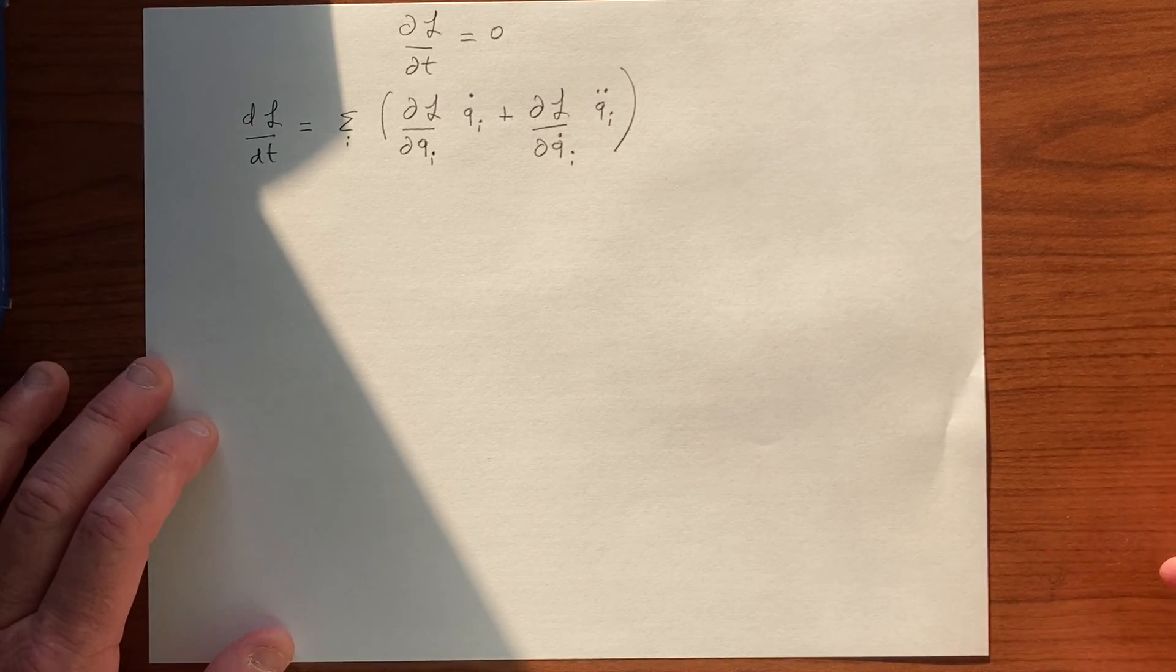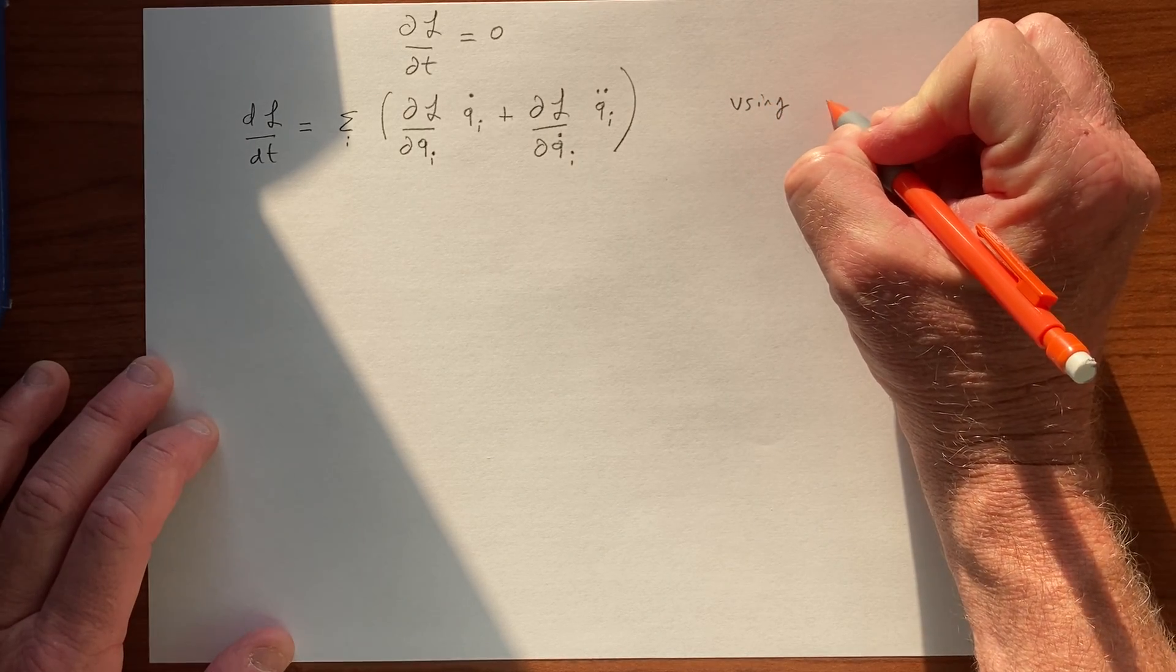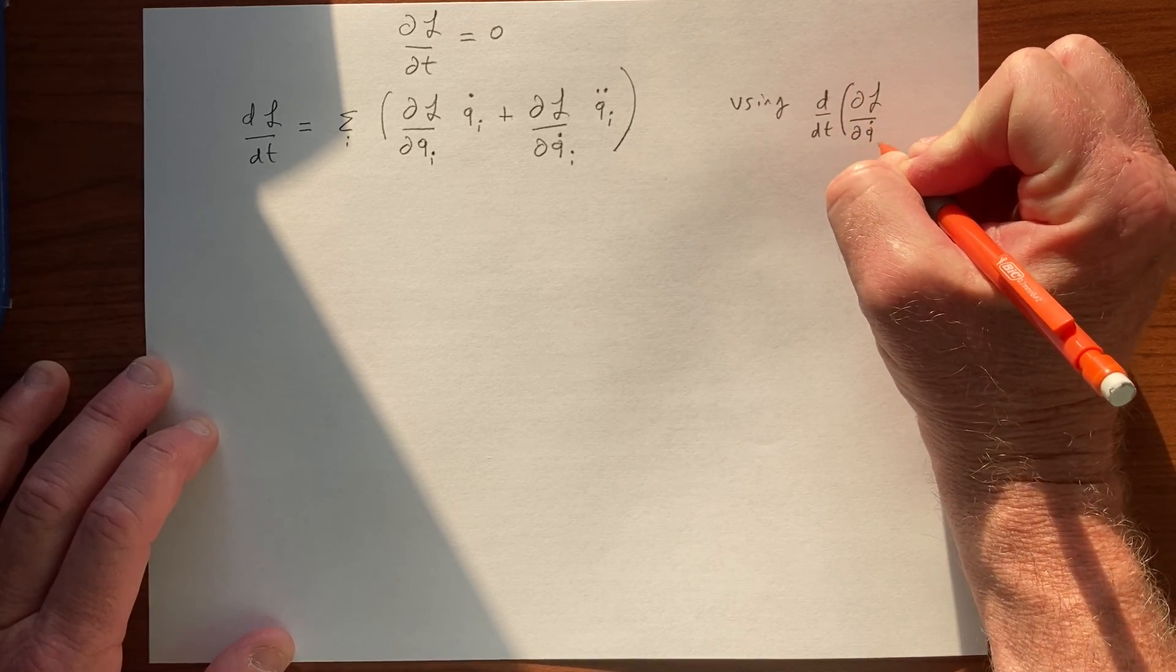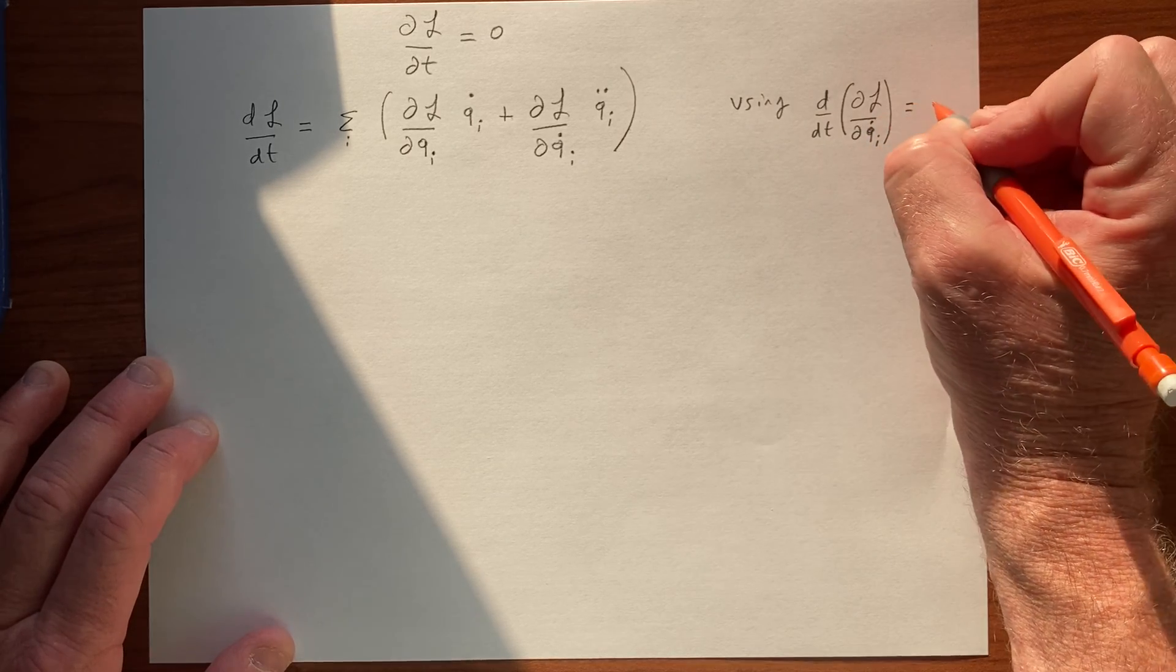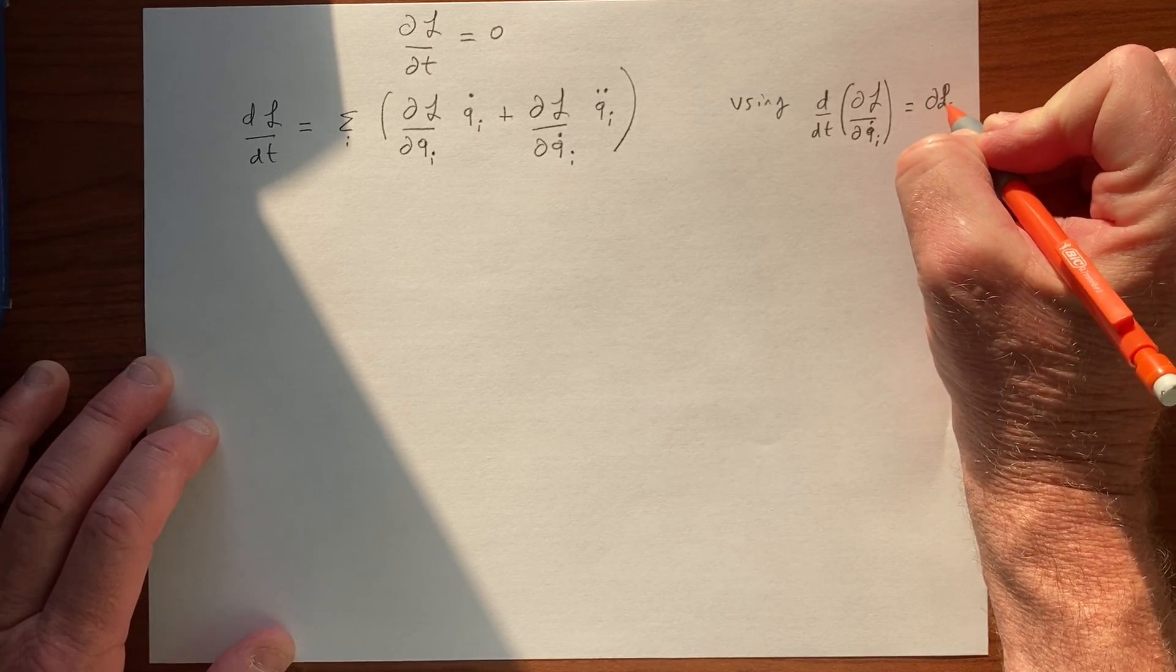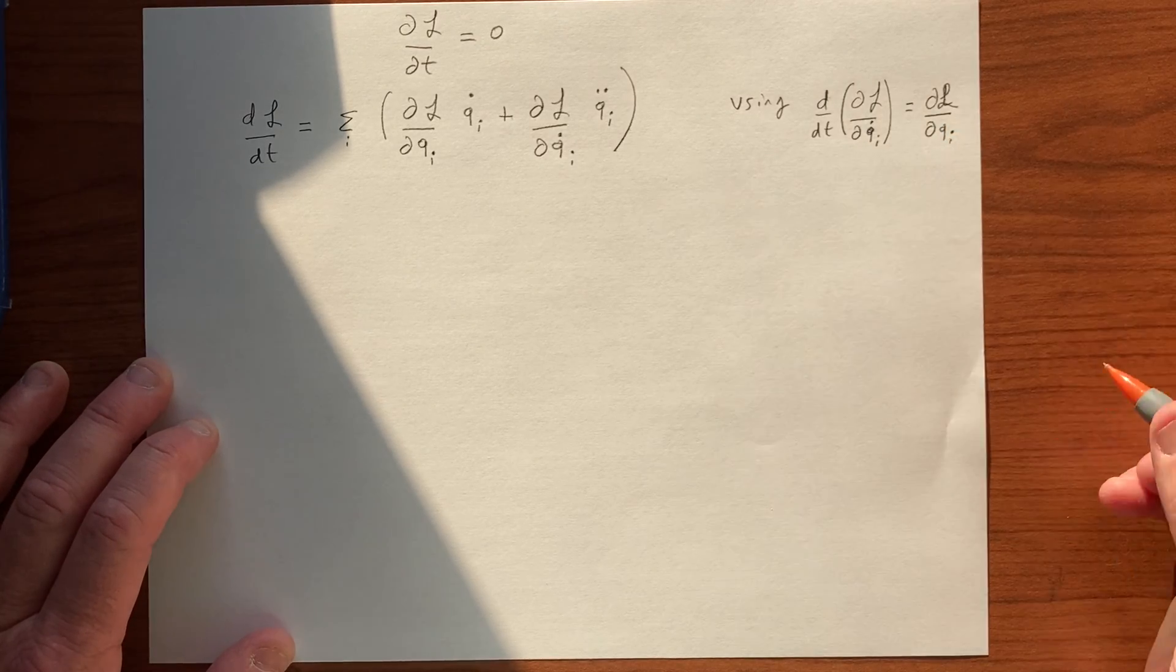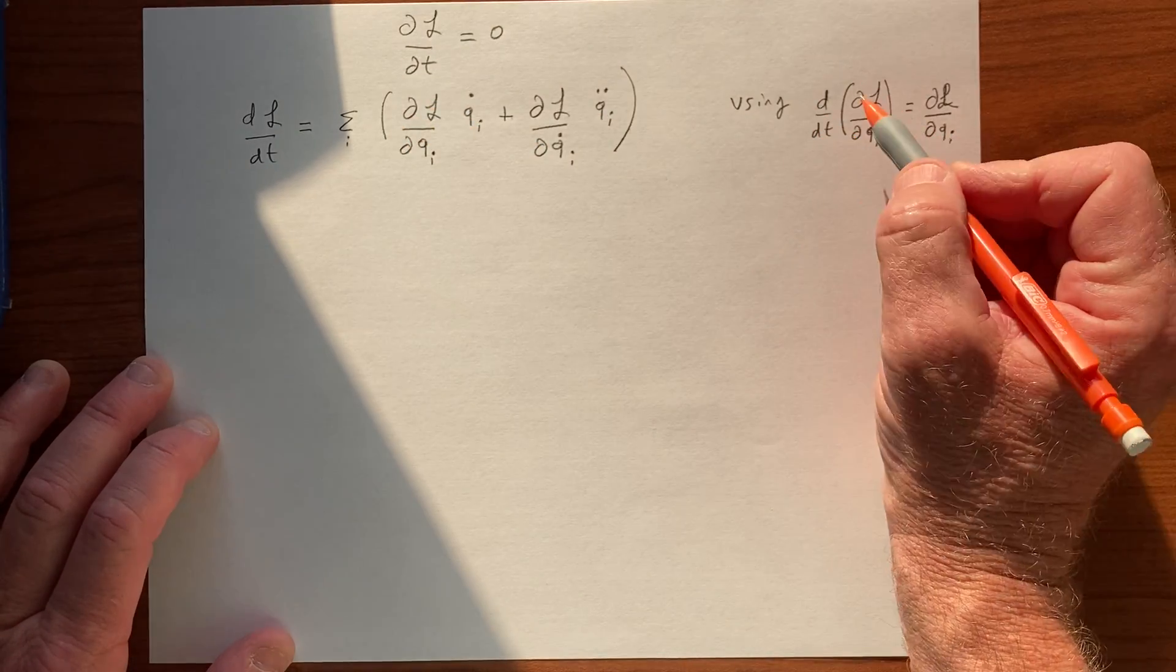But of course this is true, right, the Euler equations—sorry—DL by DQi, and so we can replace this term with this.